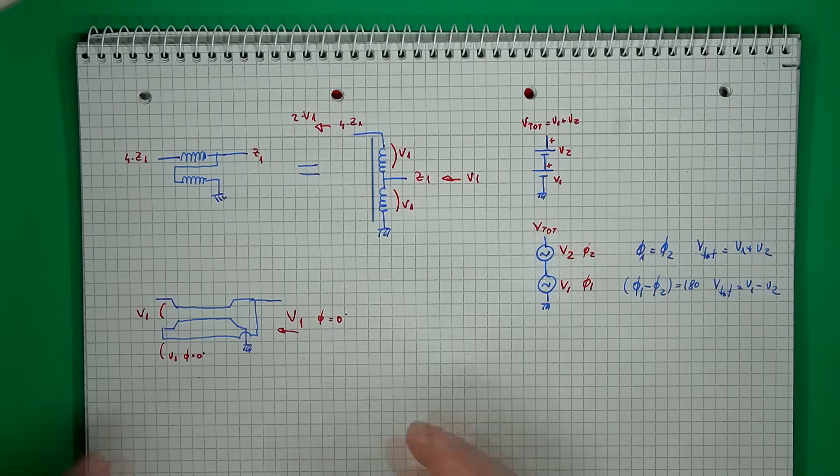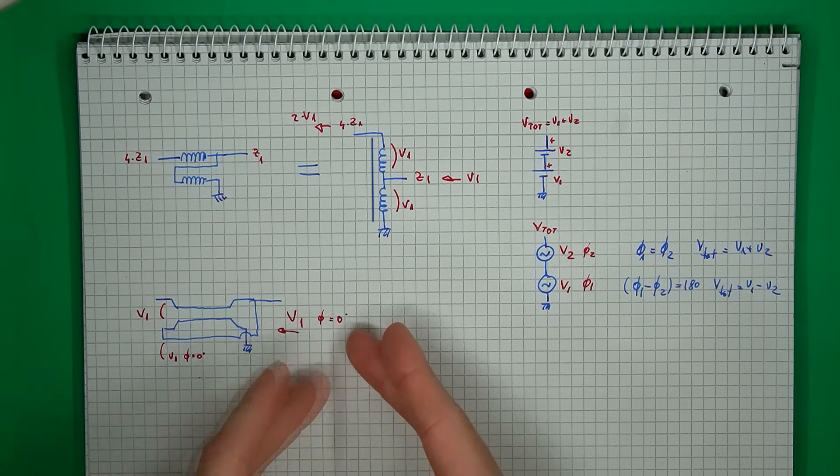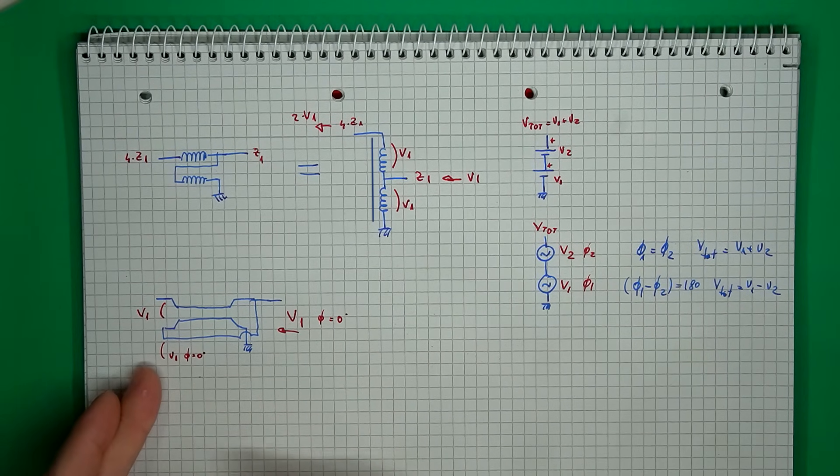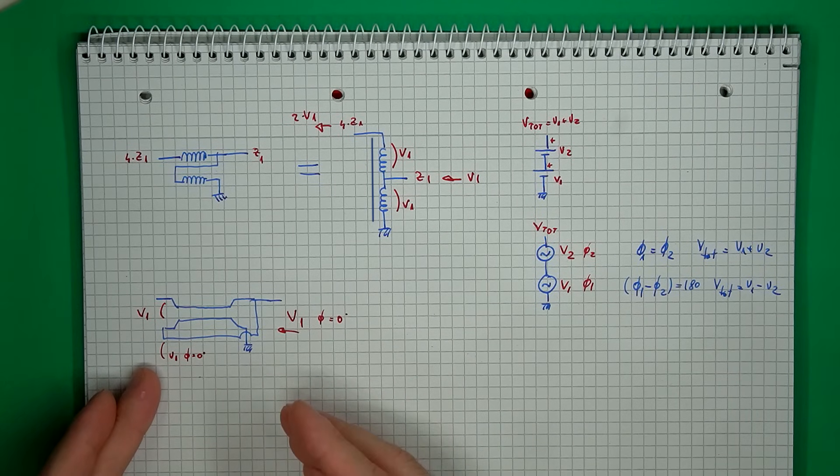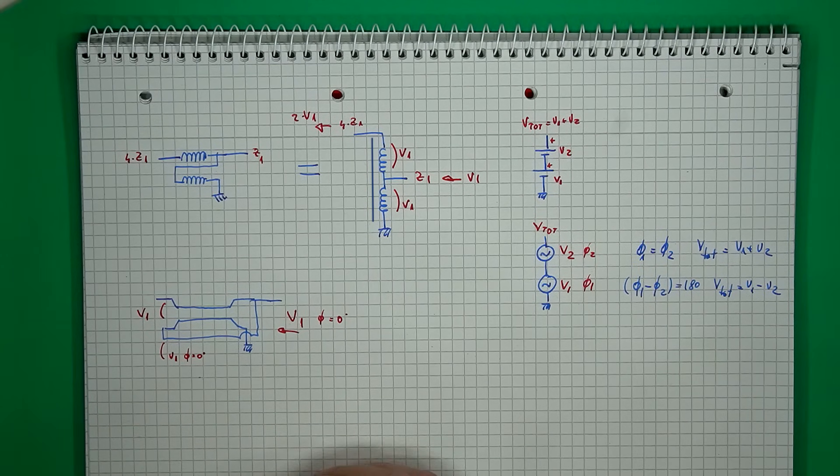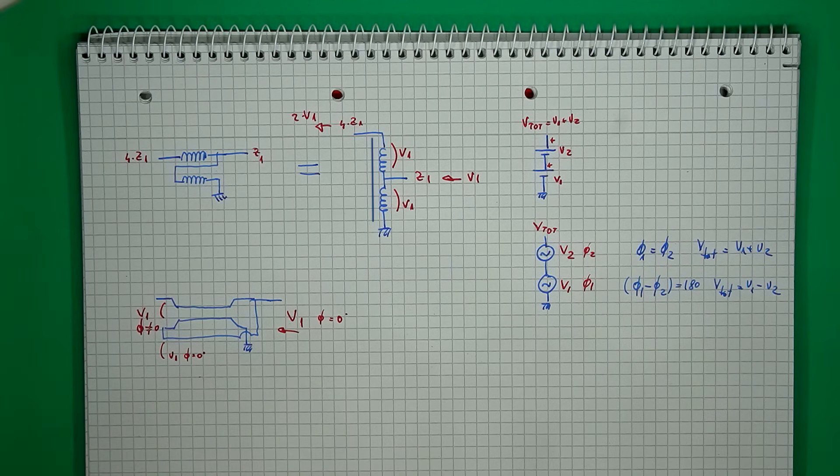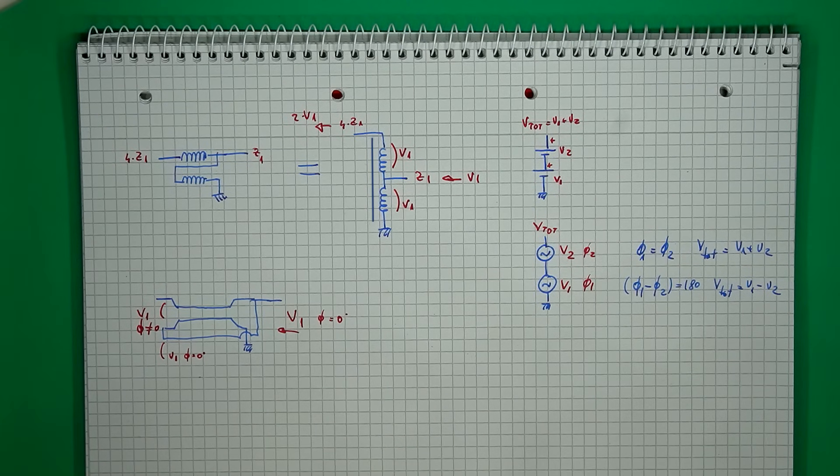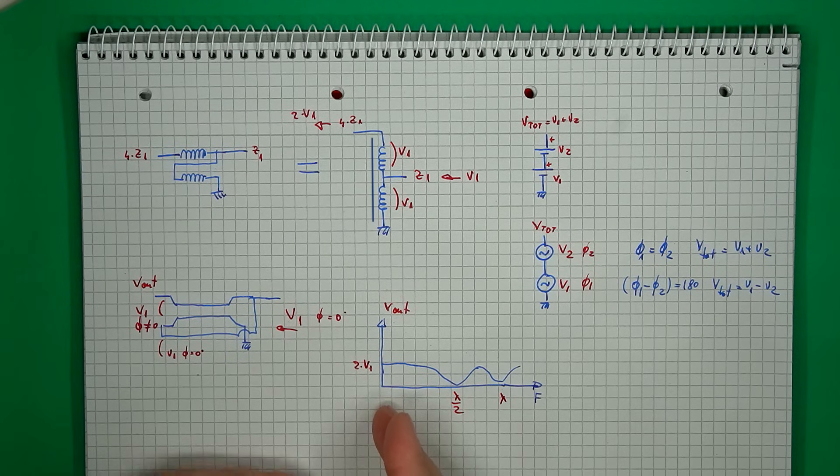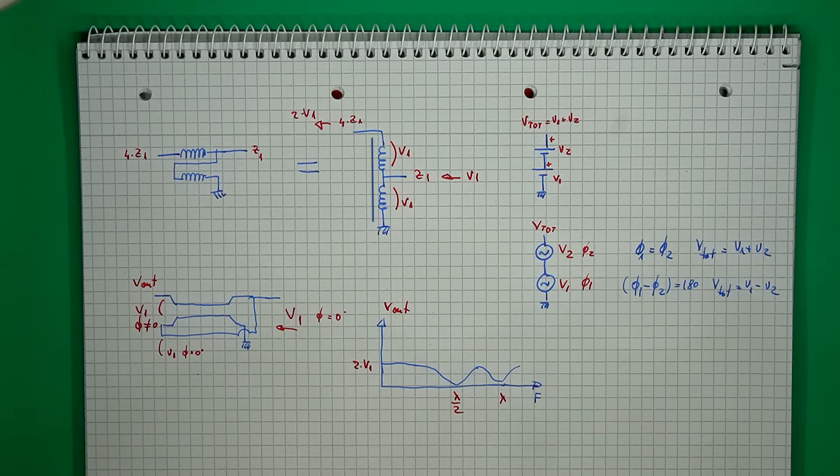But one thing to keep in mind is that if we keep, say, V1 as our reference, this has zero degrees of phase shift, and this is one of the voltages that gets to the end, but the other voltage that arrives through the transmission line has a specific phase shift given by the exact length of the line and the working frequency. So the two voltages that get added up have a non-zero phase shift in between them. In other words, it's perfectly normal to get the effect that we were measuring and simulating.